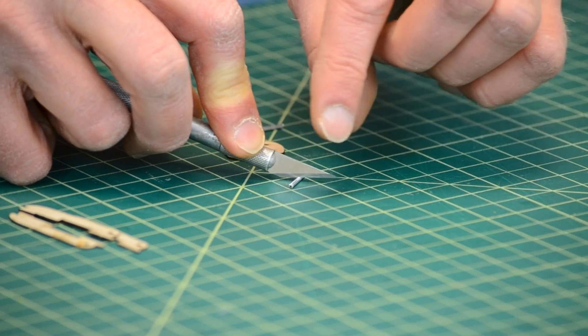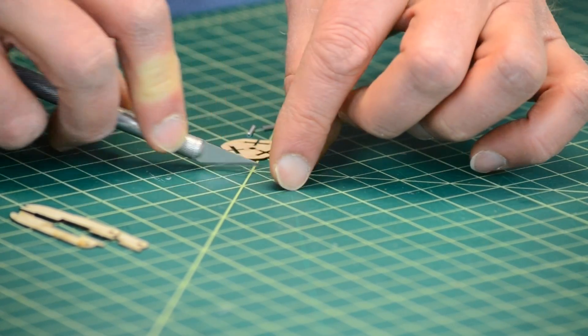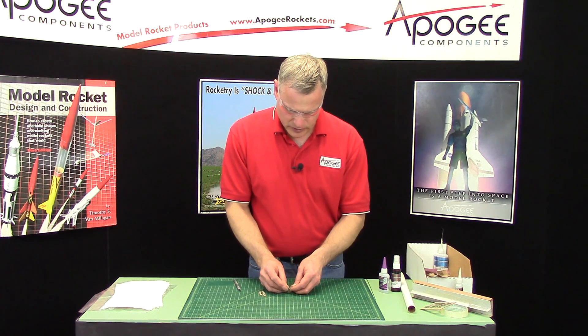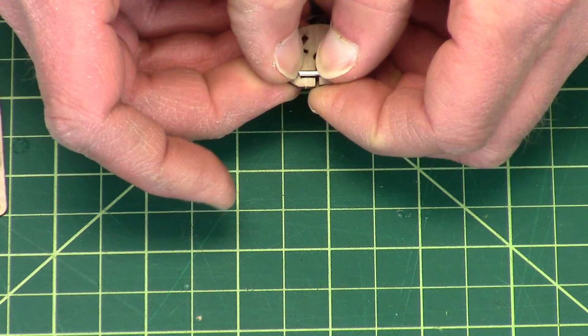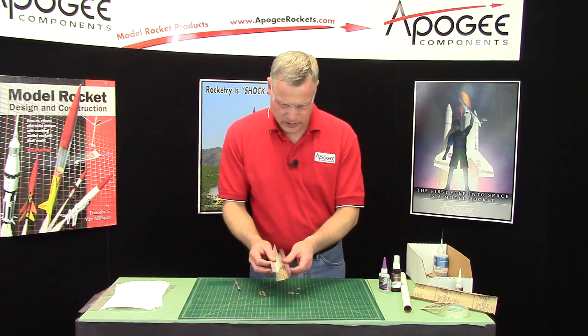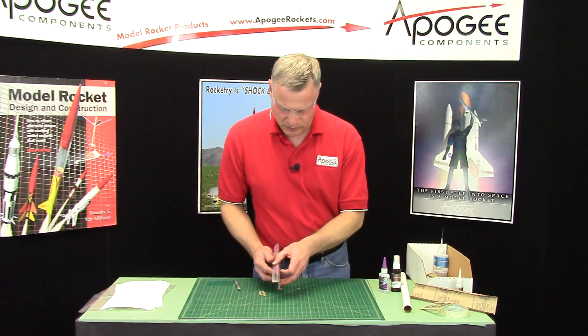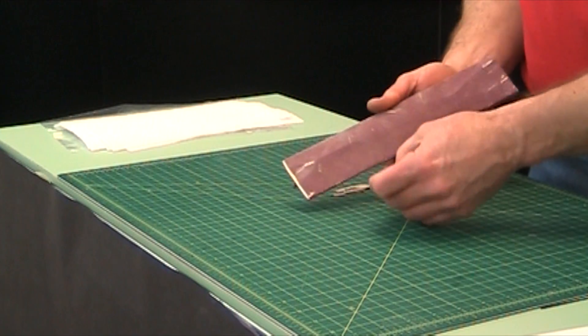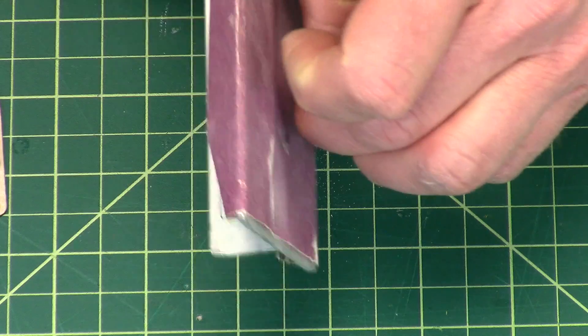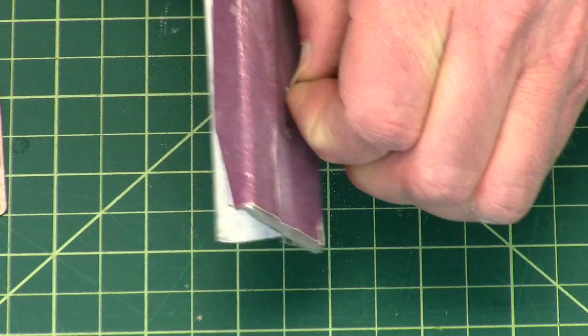That one's a little long, so I'm going to sand it down with some medium grit sandpaper. The only reason is I want to get it to fit into that slot. It doesn't have to be a nice pretty end; no one's going to see this, and it doesn't affect the performance of the rocket at all.